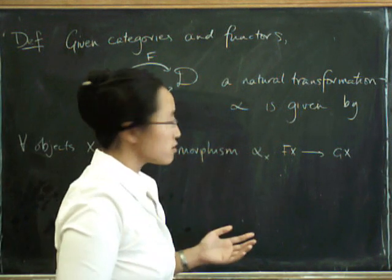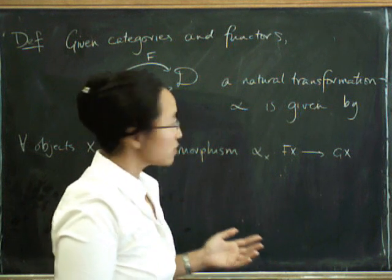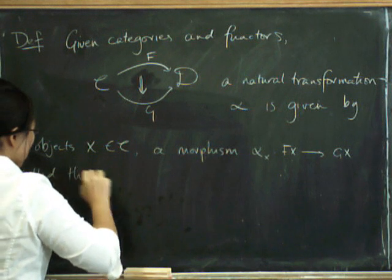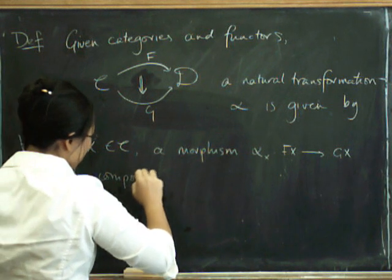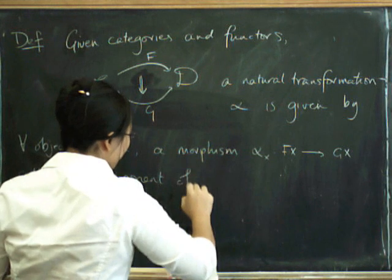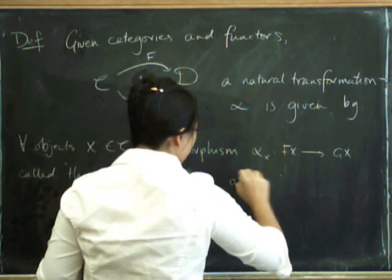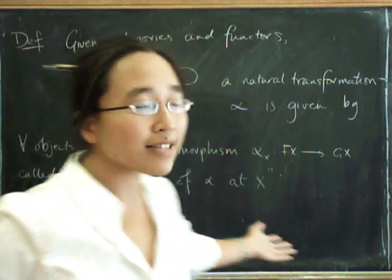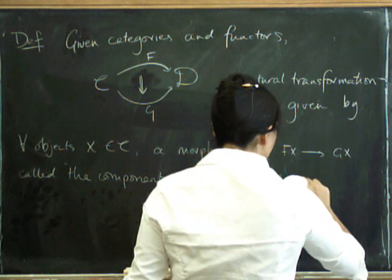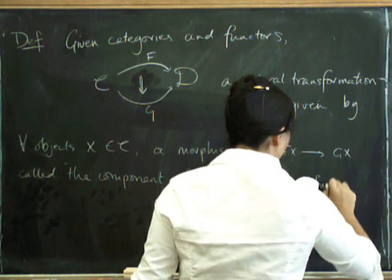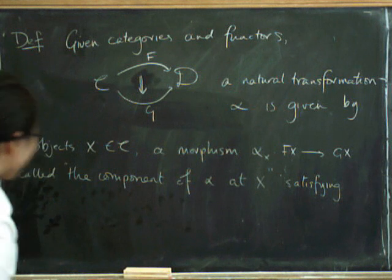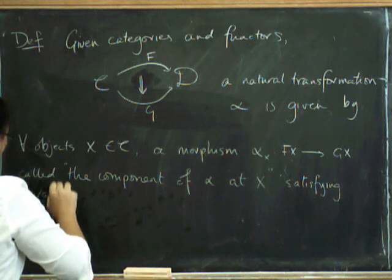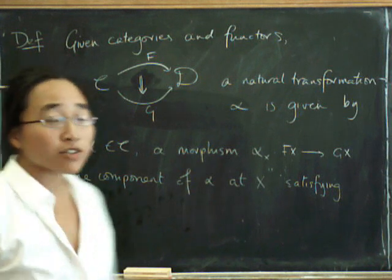And that's going to be called, we're going to refer to that in general as a component of this natural transformation. So this is called the component of alpha at X. And of course it's not just any old collection of morphisms like that, there has to be some axiom satisfying naturality. What does naturality say?